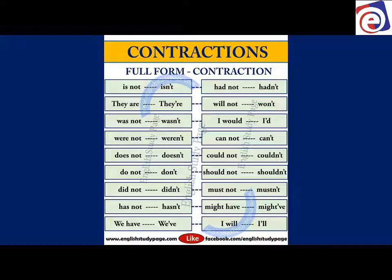Might have / might've, I will / I'll. We're going to say these again and you will say them after me. To use contractions, you must say the final consonant clearly. If it's an L, you must make the L sound. Listen to me and say them after me: isn't, there, wasn't, weren't, doesn't, don't.